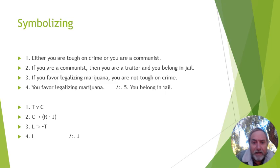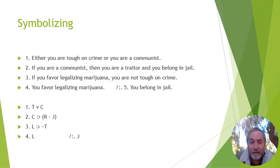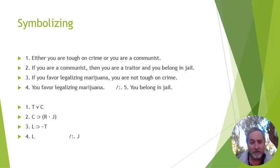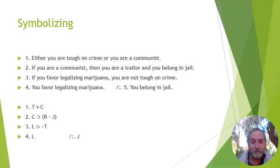Premise three: 'if you favor legalizing marijuana, you are not tough on crime.' It's a conditional — 'if' at the start, comma in the middle, no 'then.' The antecedent is L (you favor legalizing marijuana). The consequent is not-T (negation of tough on crime). So premise three is: if L, then not-T. Premise four: 'you favor legalizing marijuana' — atomic, that's just L. The conclusion 'you belong in jail' is also atomic — that's J.